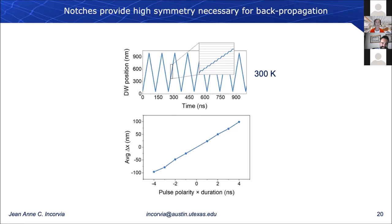We also have high symmetry. Plotting the domain wall position over time as it's pushed back and forth across the notch synapse, we can see all the different levels the domain wall samples as it moves. Plotting the average change in position versus pulse polarity in both directions, we see good symmetry and a highly linear average change.